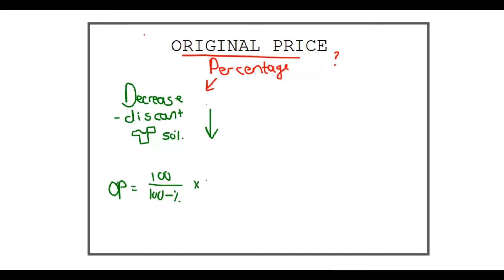If it says 50% you will just put in 50, and then you times that by the new price you are given. We are going to be looking at an example, quick and easy, on how you can apply this formula.